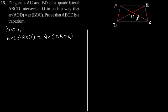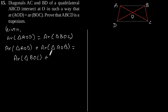Adding area of triangle AOB on both sides, we will get area of triangle AOD plus area of triangle AOB is equal to area of triangle BOC plus area of triangle AOB. This will give area of triangle ADB equals area of triangle ACB.